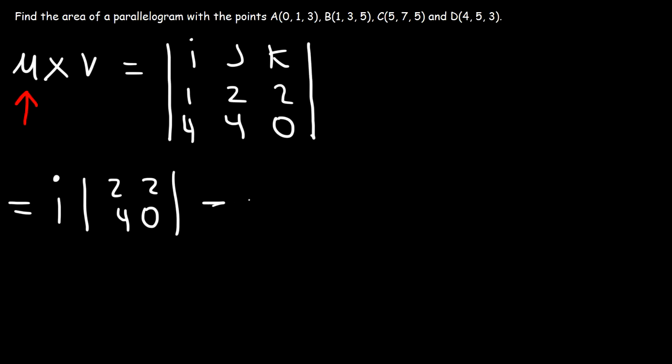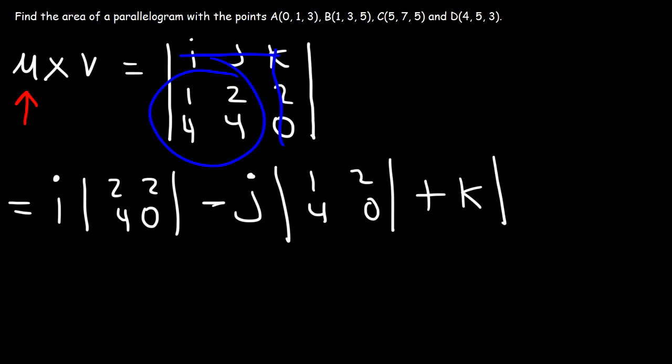After that, it's going to be minus the middle unit vector j. And j is in the first row, second column, and so that leaves behind 1, 4, and 2, 0. And then it's going to be plus k. Now the unit vector k is in the first row, third column, and it leaves behind the numbers 1, 2, 4, 4.